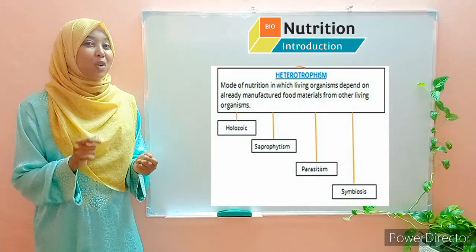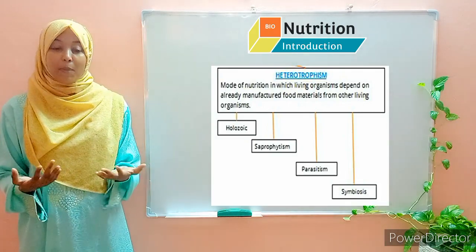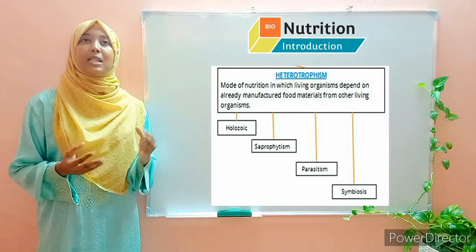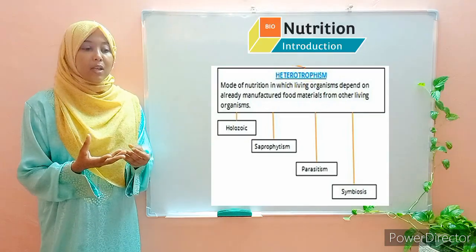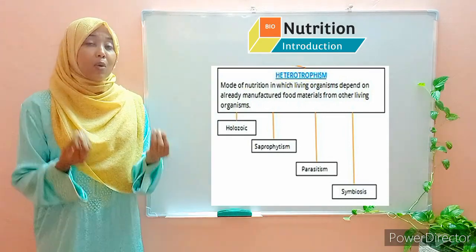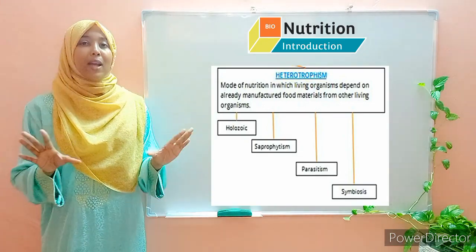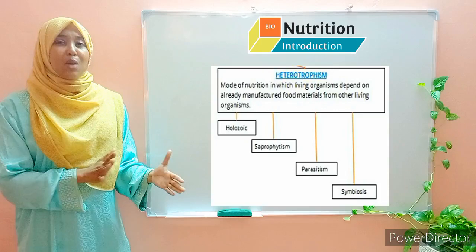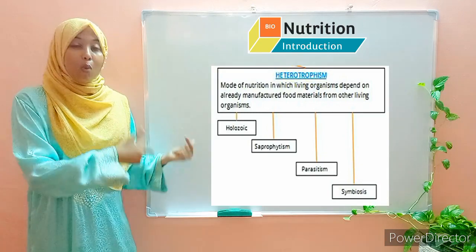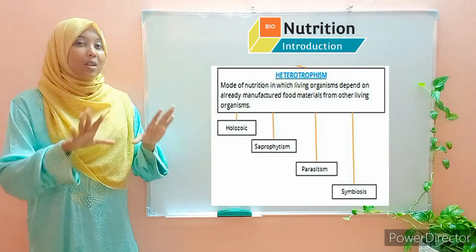The last type is symbiosis — a mode of nutrition whereby organisms live together and mutually benefit one another, meaning each provides something to the other. These organisms must belong to different species, because if they belonged to the same species they would have the same attributes and whatever one lacks the other would too. So they belong to different species and each contributes to the other in different ways.